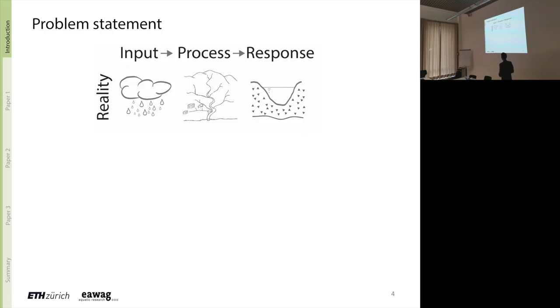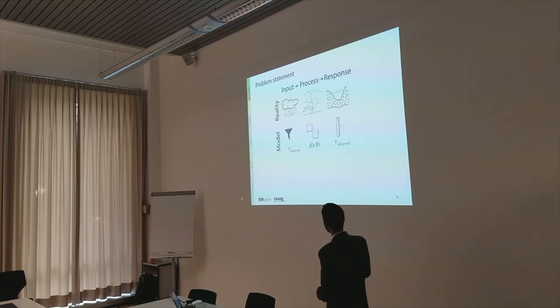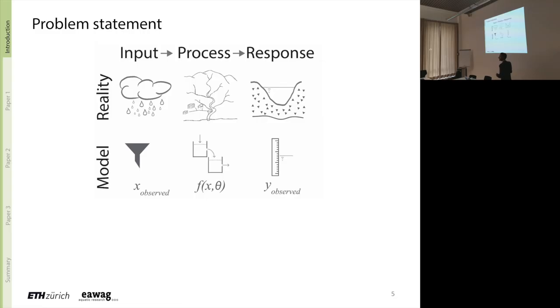First, the problem statement. So a catchment can be seen as a system which takes some input and gives us some output. In the context of rainfall runoff, that input would be precipitation signal, and the output would be flow at the downstream of a catchment, which we call discharge. If we want to have mathematical models for the system to explain the phenomena or to have predictive capabilities, we start with some simplifying assumptions. So essentially we will have some measurements of the input signal, some equations which correspond to the dominant processes in the catchment, and then observations of the system response.